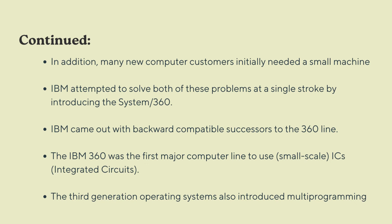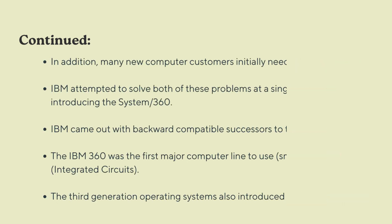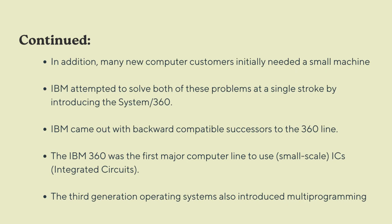To summarize the third generation: the basic framework involved two main tasks. The first generation machines were the same size, but the second aspect of third generation computers is that they were smaller and faster than their predecessors.